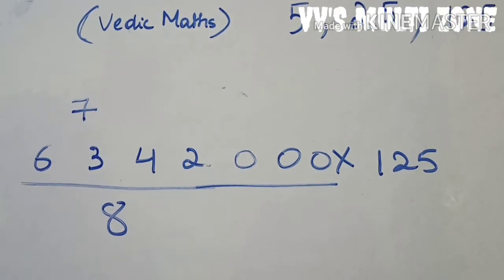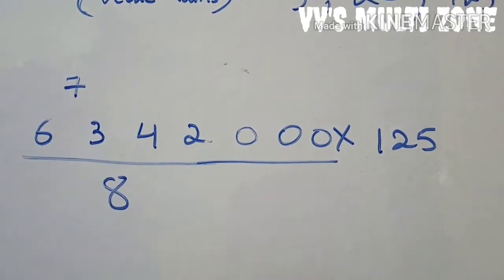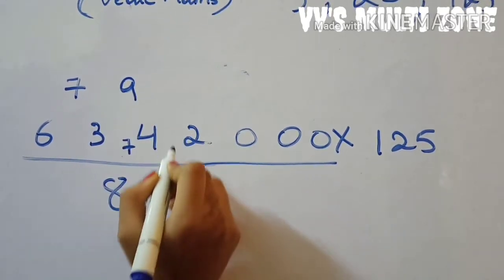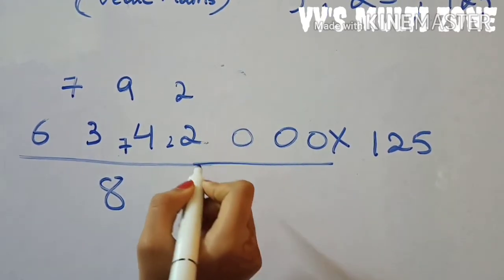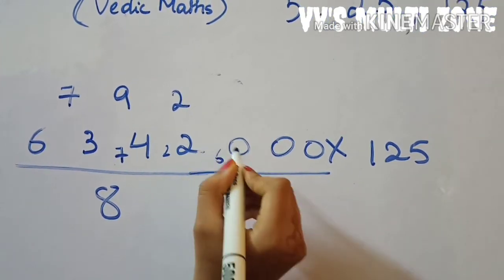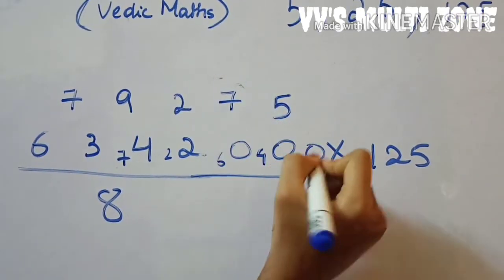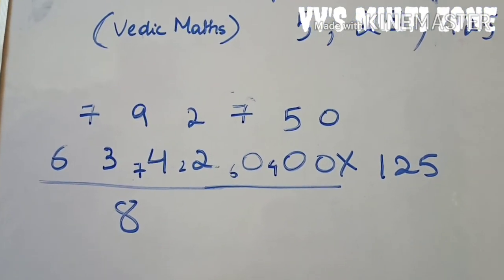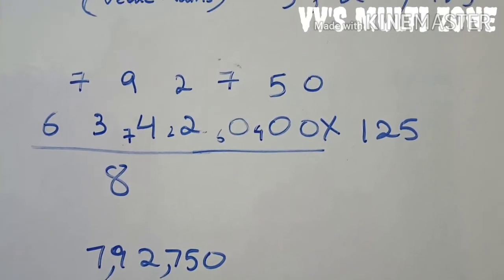We start with eight sevens are fifty-six, and seven gets carried. Eight nines are seventy-two, two gets carried. Eight twos are sixteen, six gets carried. Eight sevens are fifty-six, four gets carried. Eight fives are forty, and zero as it is. Your answer is seven lakh ninety-two thousand seven hundred and fifty.